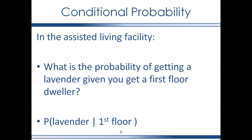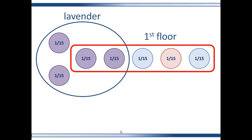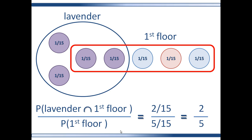On the flip side, what if you know you're going to get somebody from the first floor and you want to know the probability of getting a lavender? What is the probability of getting a lavender given that you get a first floor dweller? The answer changes because the denominator changes but the numerator remains the same. This time the denominator is the probability of being a first floor dweller, which is the conditional part, and the answer is two-fifths.